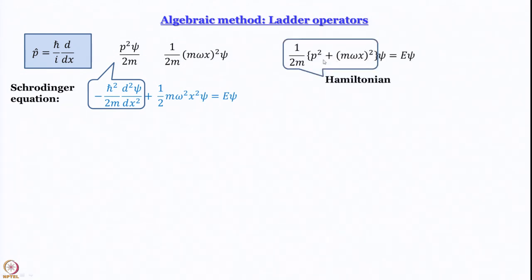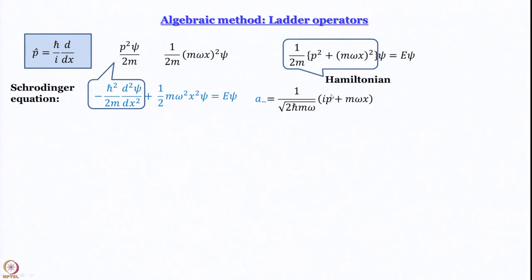Since there is a 1/2m in the kinetic energy term, we take 1/2m common from the second term as well, so that you get the square of (mωx) operating on ψ. The Schrödinger equation then becomes (1/2m)[p² + (mωx)²]ψ = Eψ — this full operator in brackets is the Hamiltonian. What we have essentially done is rewritten the Hamiltonian in terms of the linear momentum operator. This Hamiltonian is a sort of u² + v² kind of term.